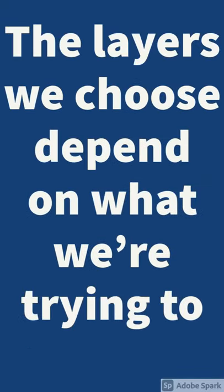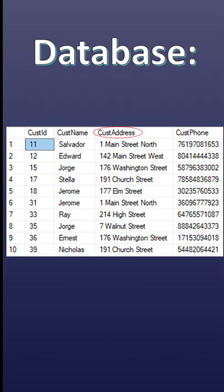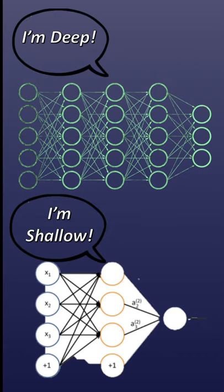The layers we choose depend on what we're trying to solve and the data we have available to us. Oh, and a network is considered deep if it has many layers. Deep learning just means using these bad boys.